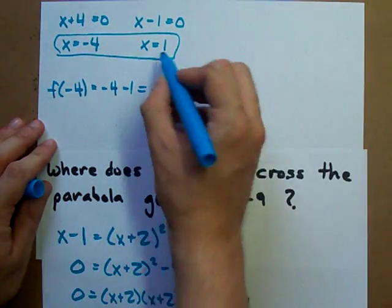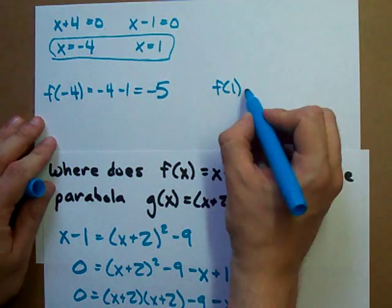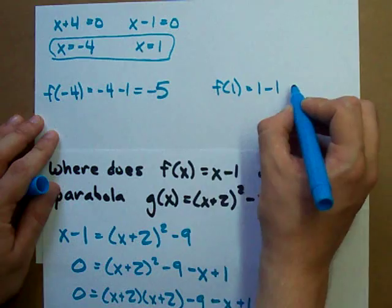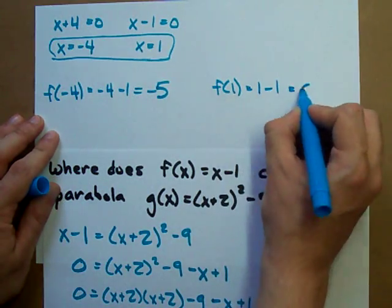If we plug in 1, f of 1 turns out to be x minus 1, which is 1 minus 1. See? x is 1. Equals 0.